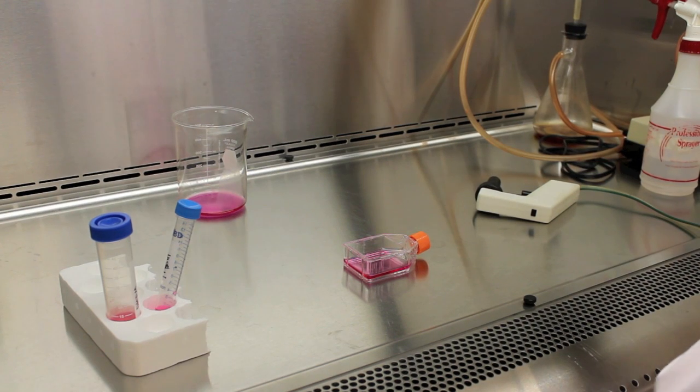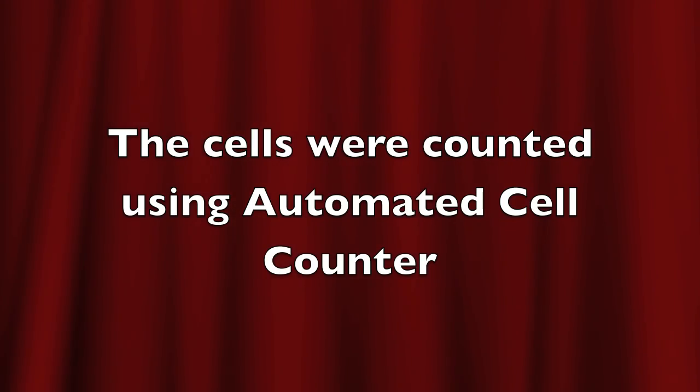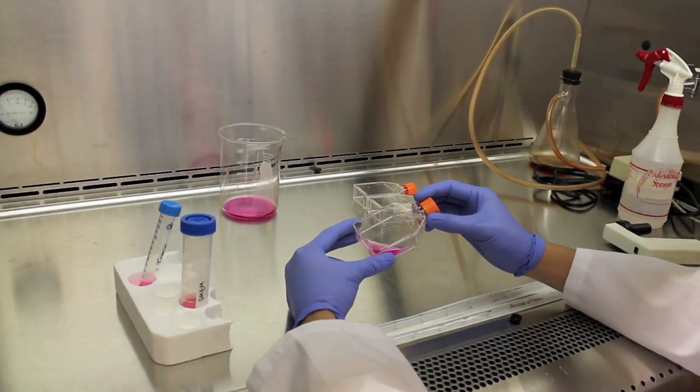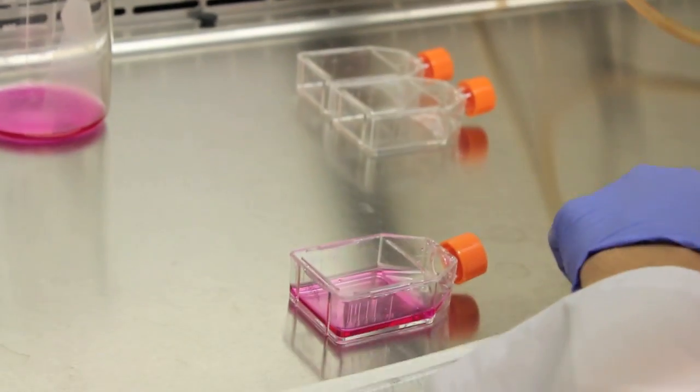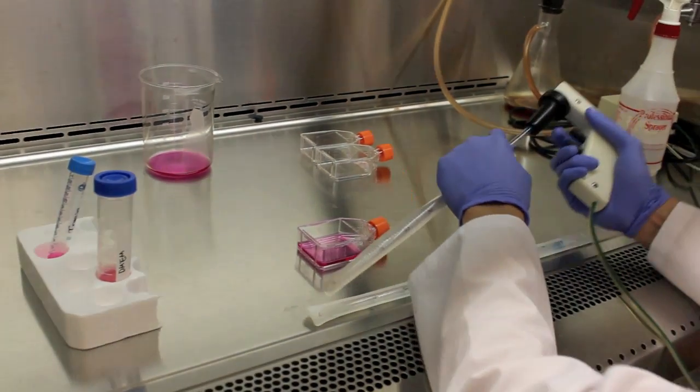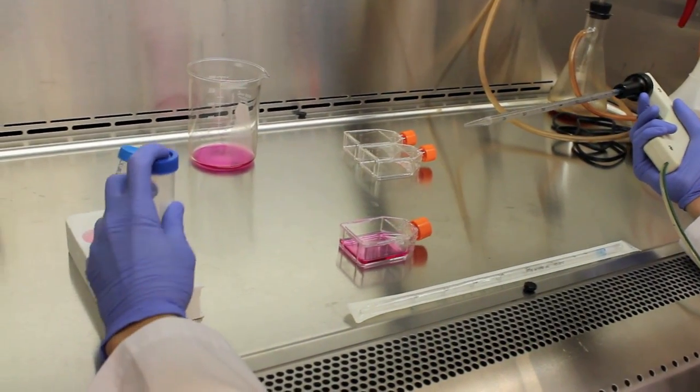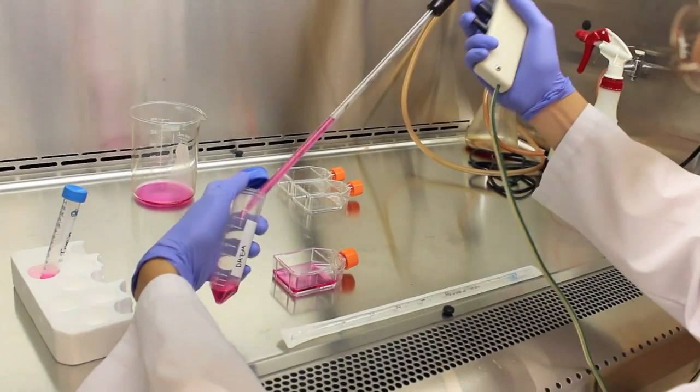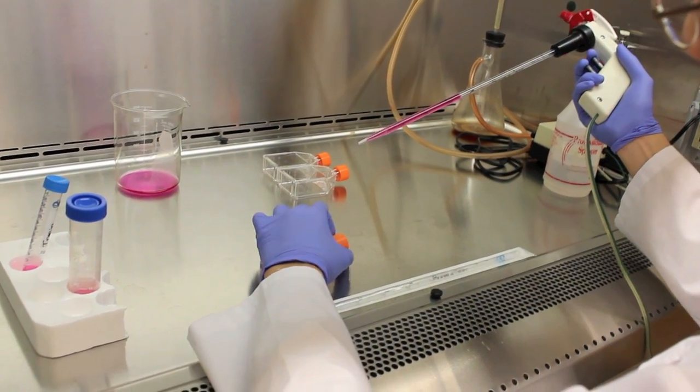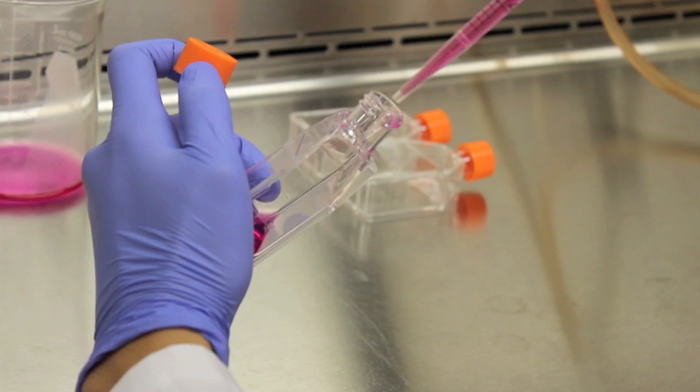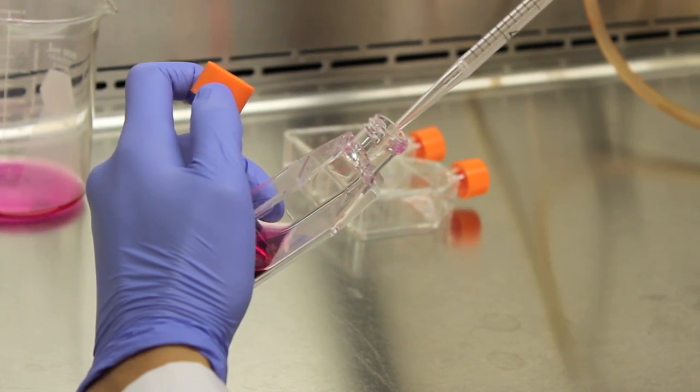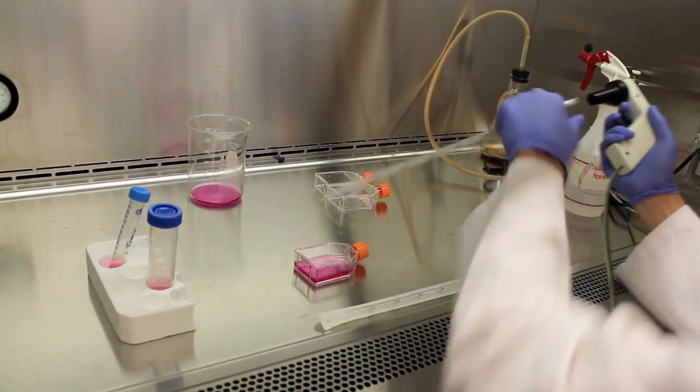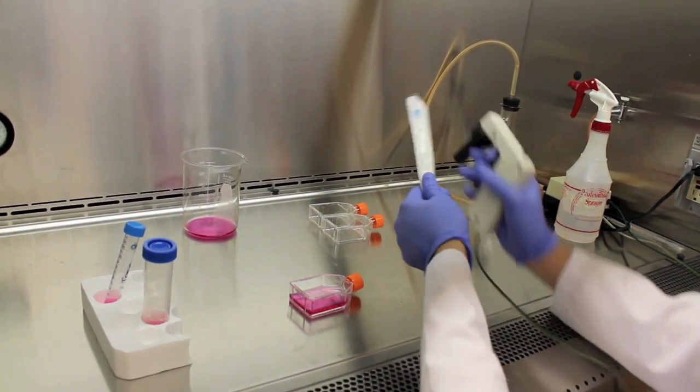Next, do a cell count. This flask has around 500,000 cells, so we separate into two flasks. Add more 3.5 ml of new media, and then we split into two flasks.